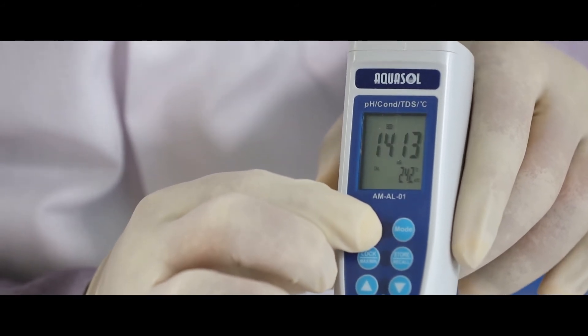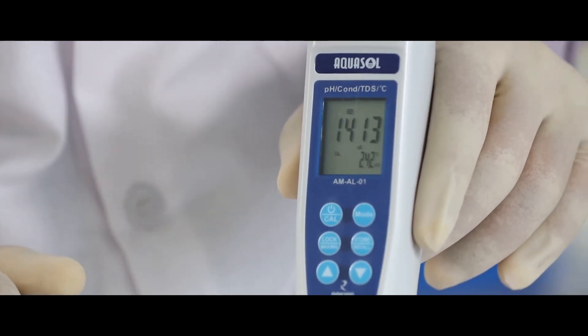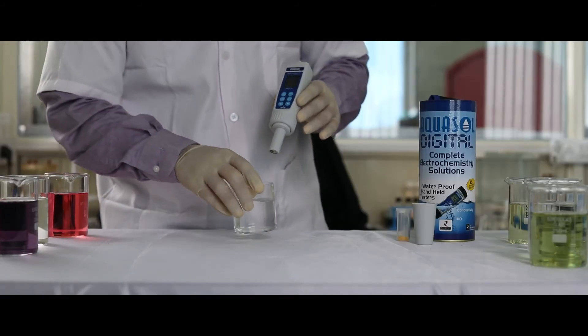Once calibration is done, device will display SA and END. Once we rinse the electrode with clean water, we can check the conductivity of the sample acquired.